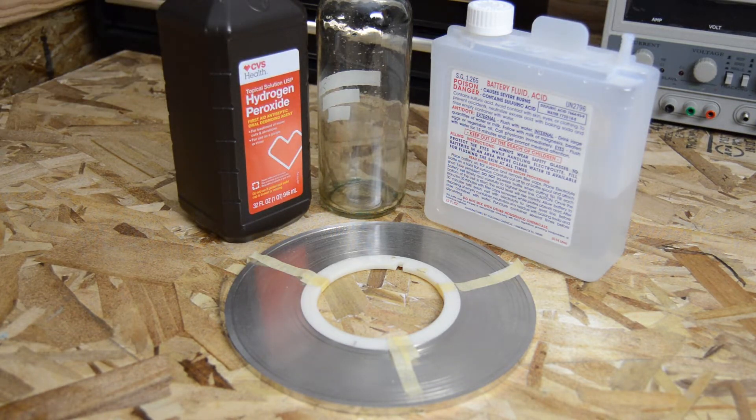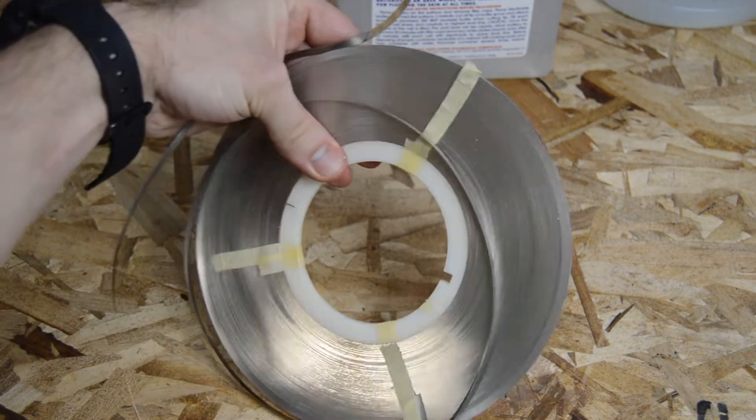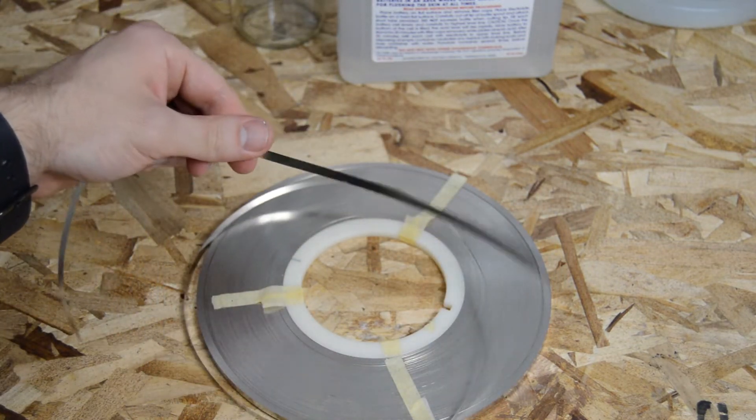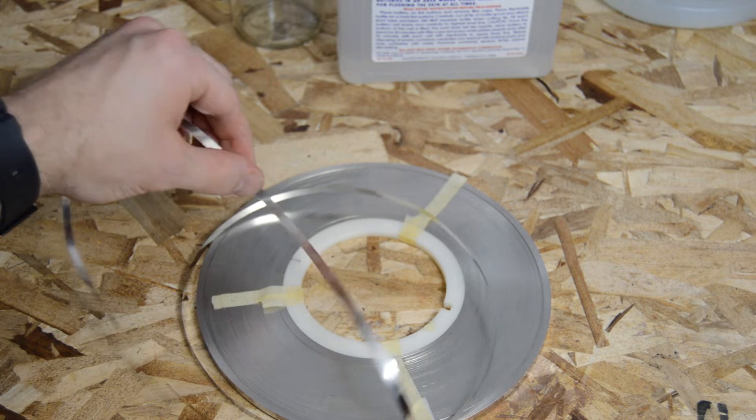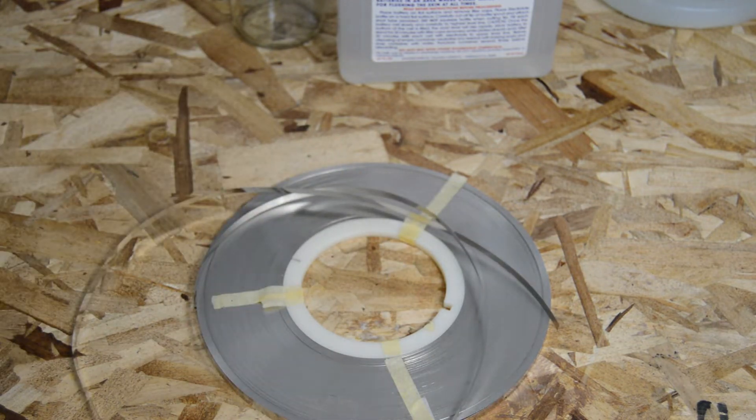I'll be using nickel metal strip made for creating rechargeable battery packs. This nickel strip is usually tack welded to join rechargeable batteries together to create battery packs. It's also 99.6% nickel so it's very well suited for this project since pure nickel is actually a little hard to come by at a reasonable price.